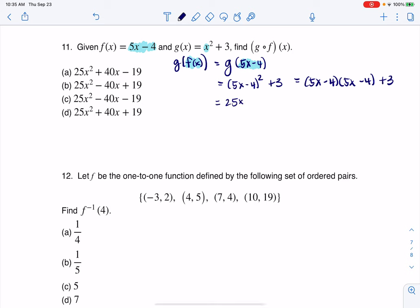So we've got 25x squared, outer is negative 20x, inner is negative 20x, last is 16, plus 3. So I'm looking at basically 25x squared minus 40x plus 19, and let's see if that matches up. That does with b.